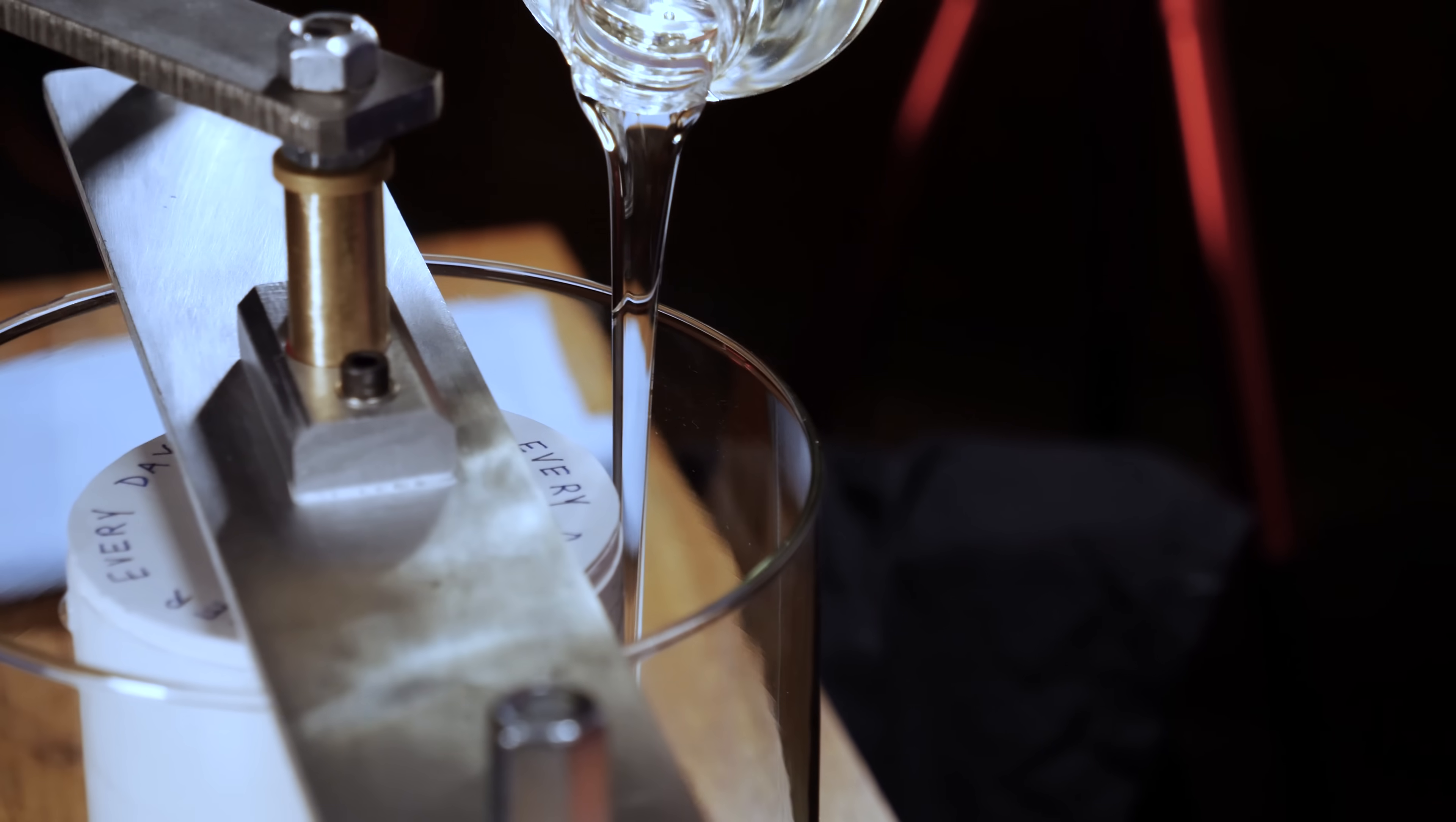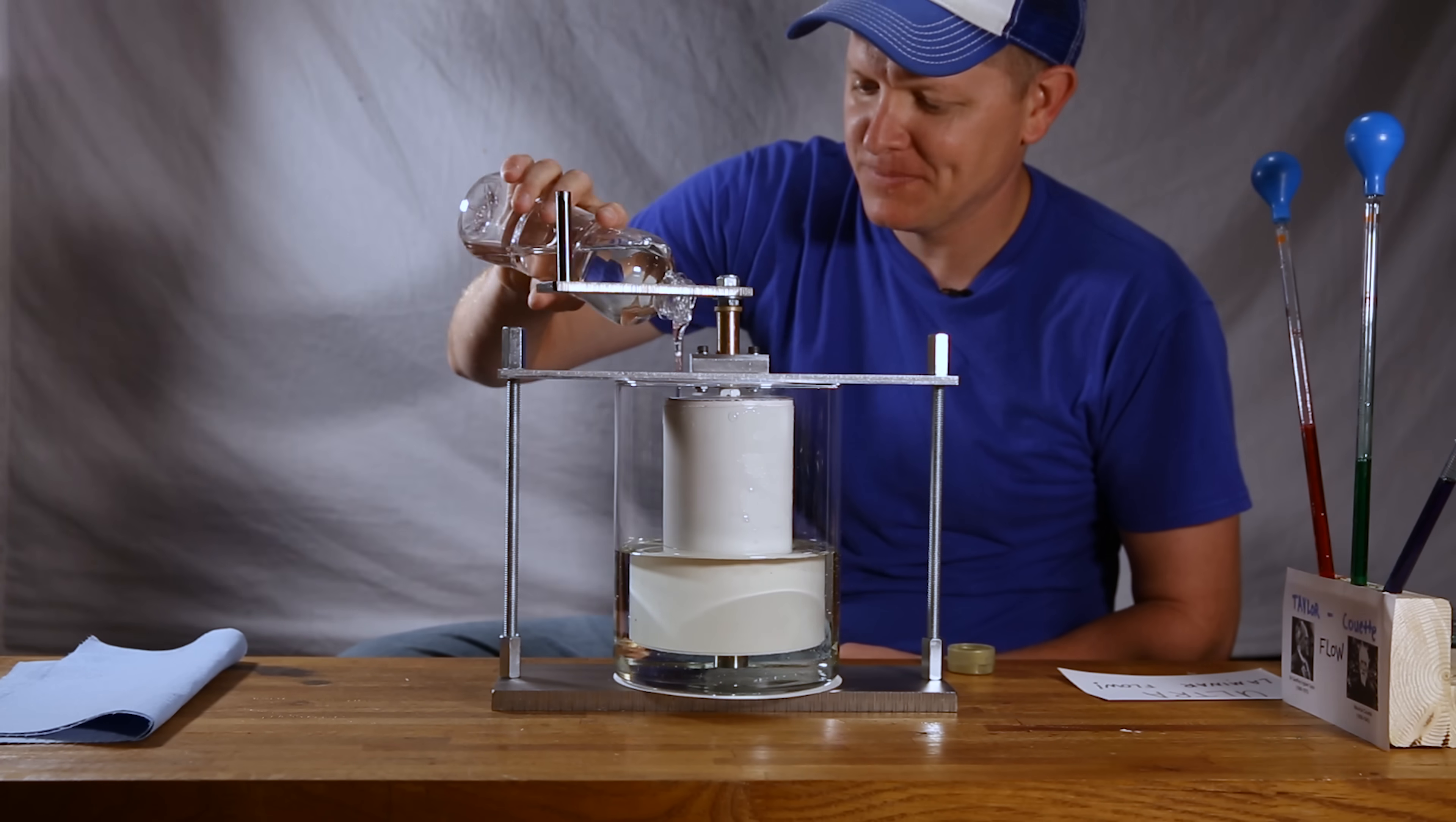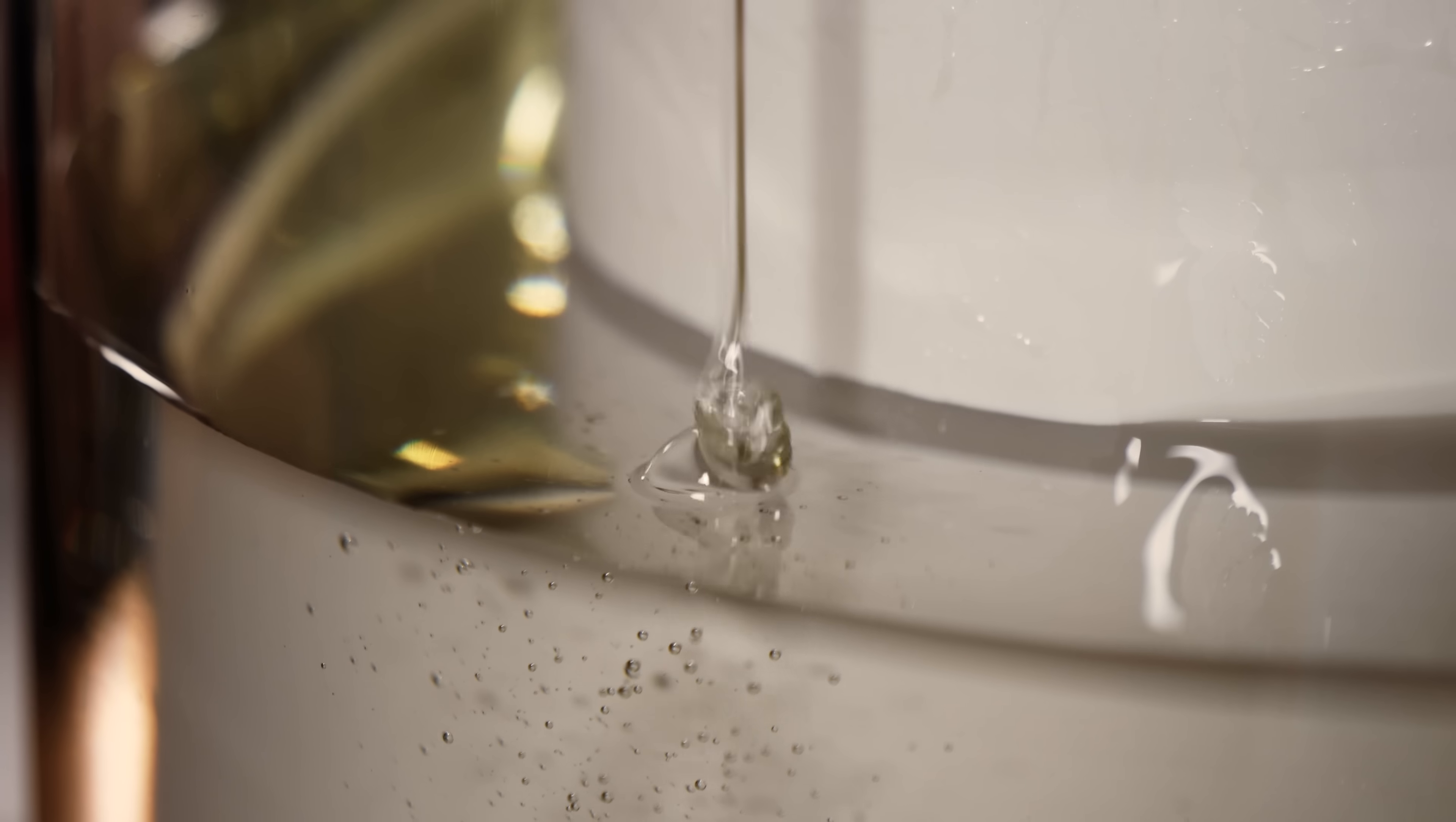First things first, we've got to fill up the tank. This is corn syrup which is a very viscous fluid. Here we go, it's gonna take quite a while. This is a lot of corn syrup. Liquid rope coiling effect, we should revisit that, that's a topic for another video.